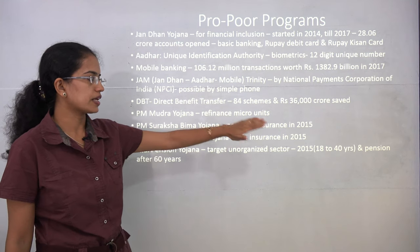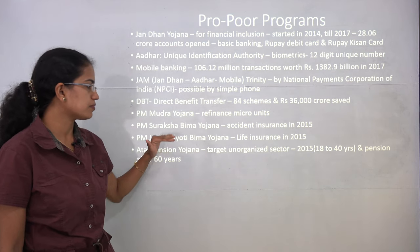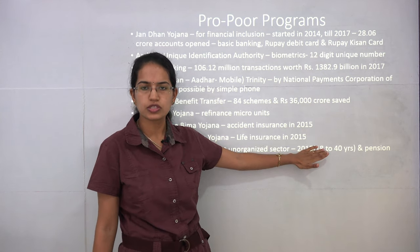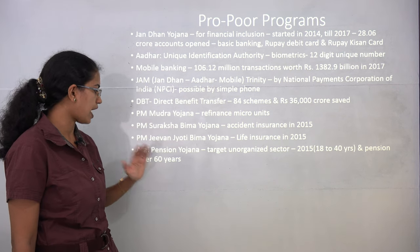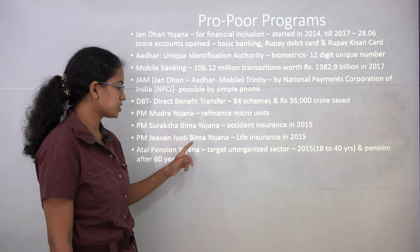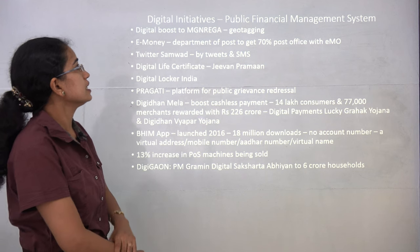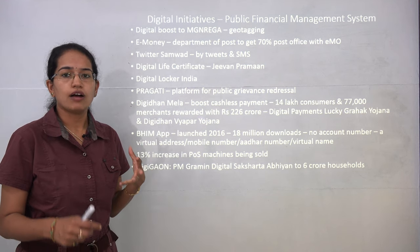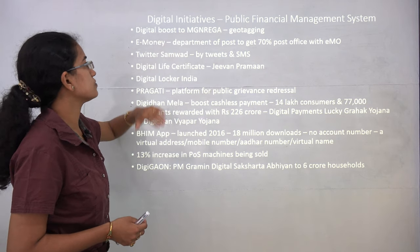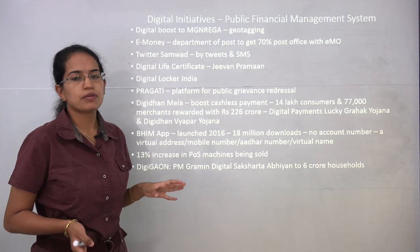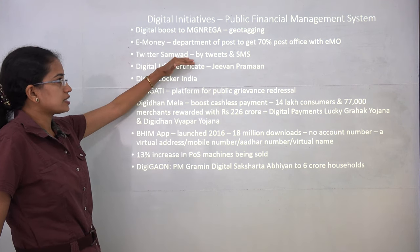Atal Pension Yojana has also been covered under social security. For the digital initiatives needed in a less-cash or cashless economy, nearly 70 percent of post offices now have the facility for e-Money Order. Twitter Samwad allows spreading messages via tweets and SMS. Jeevan Pramaan Patra — life certificates — are now digital. The Digital Locker India facility helps you keep all documents online.